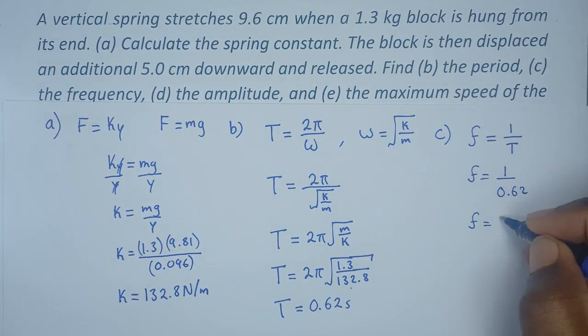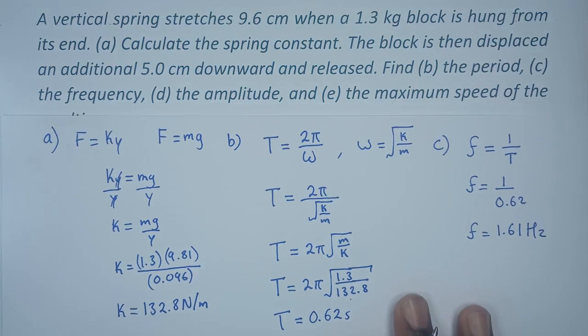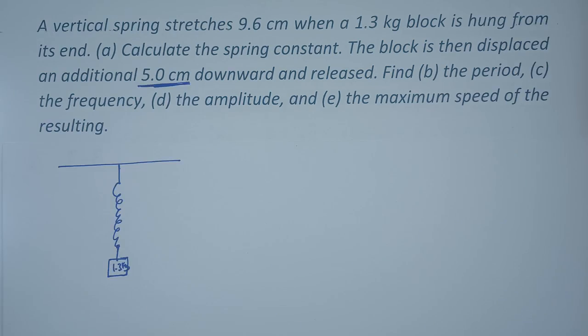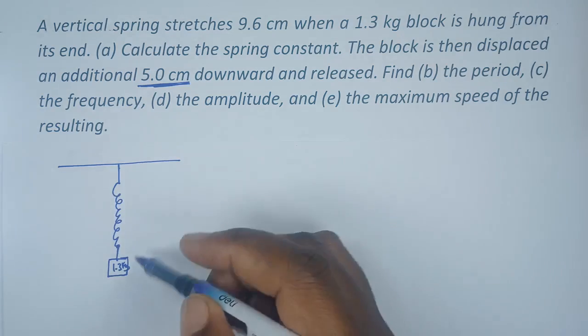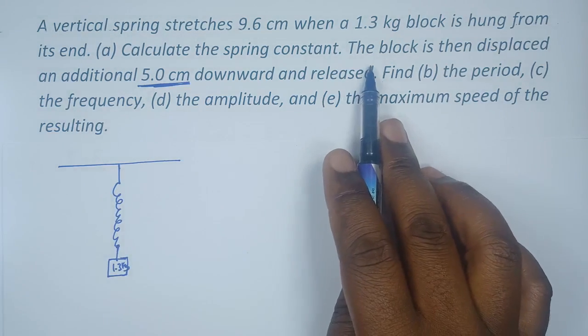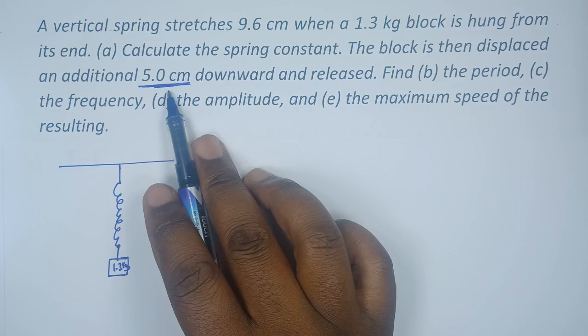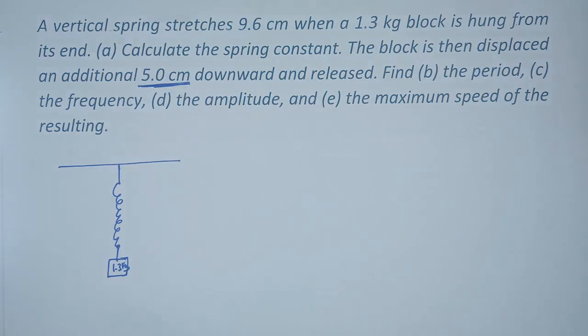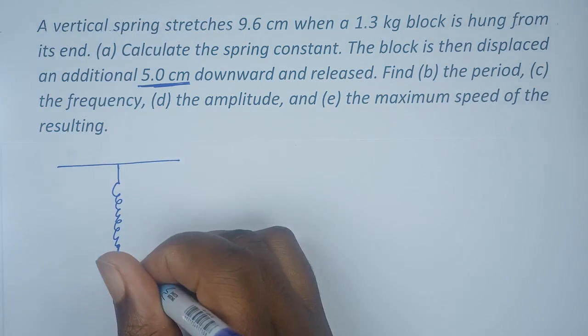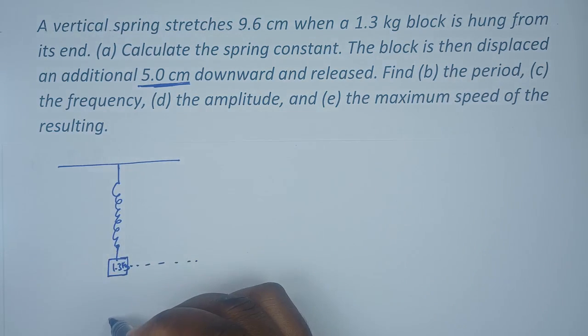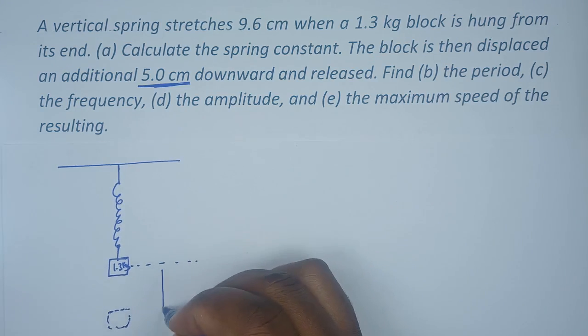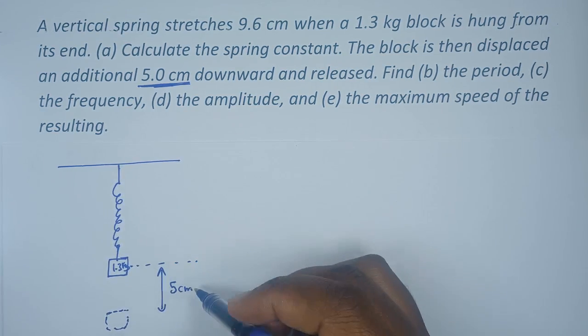To calculate the amplitude, since we were told that this spring is hung vertically, the statement says the block is then displaced by an additional 5 centimeters downward and released. This means that amplitude is the maximum displacement from the main position. Since we have displaced it with an additional 5 centimeters from the resting position, these 5 centimeters becomes our amplitude.